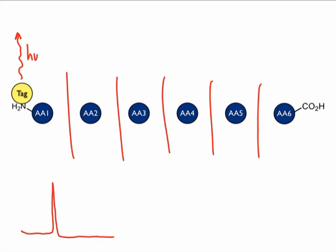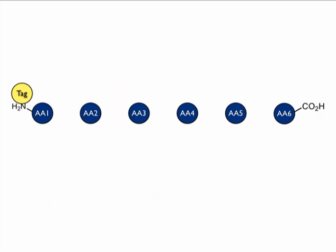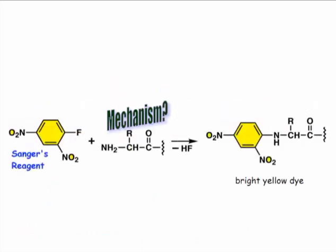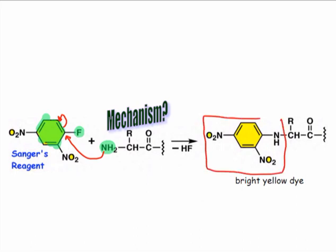In practice, the mechanisms of reactions that load the tag onto the N-terminus typically involve the amino group as a nucleophile. One of the earliest tagging reagents was 2,4-dinitrofluorobenzene, also known as Sanger's reagent. This compound contains an electron-poor aromatic ring that is susceptible to nucleophilic aromatic substitution by the N-terminus's amino group. Nucleophilic attack by the amine on the fluorine-bearing carbon is followed by beta elimination of the fluoride anion. Finally, proton transfer gives the neutral product in which the aromatic ring has been loaded onto the terminal amino group.